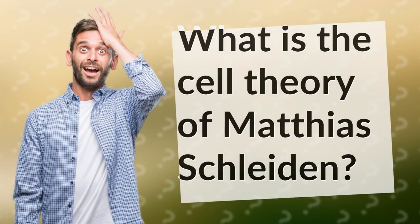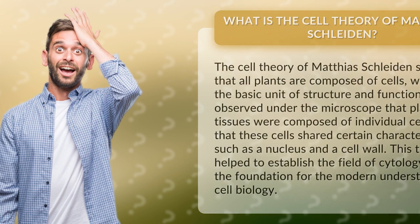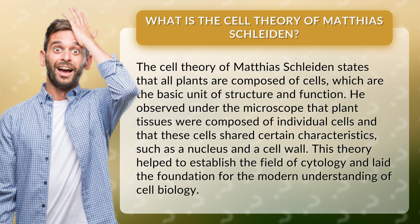What is the cell theory of Matthias Schleiden? The cell theory of Matthias Schleiden states that all plants are composed of cells, which are the basic unit of structure and function.